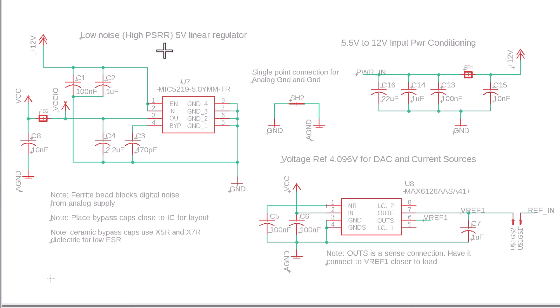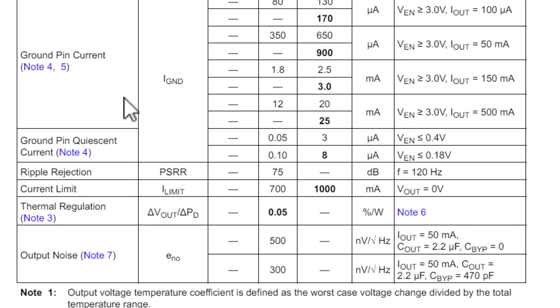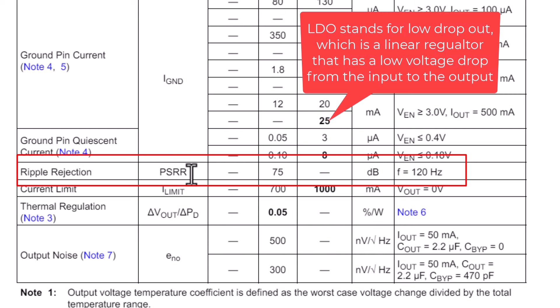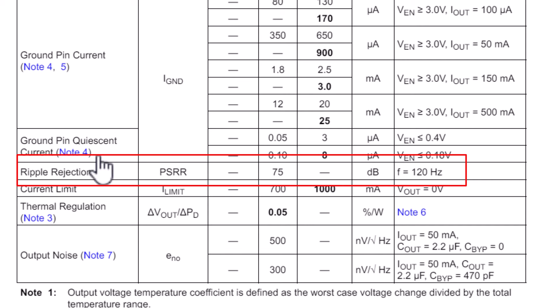I want to come back and explain PSRR. Looking at the data sheet for this 5-volt low noise, high accuracy linear regulator from Microchip: PSRR stands for power supply rejection ratio, and it's basically a spec describing the linear regulator's ability to reject noise. Many LDOs will have good PSRR specs because they're powering microcontrollers or ADCs that need low noise. Notice PSRR is given in dB — 75 dB — at a specific frequency of 120 Hz. They're saying at that frequency it can attenuate signals by 75 dB, which is a lot.